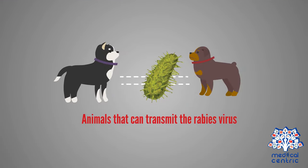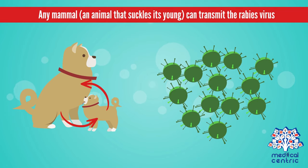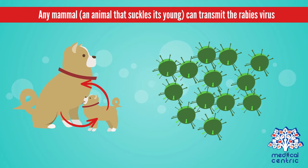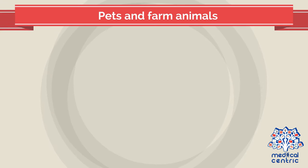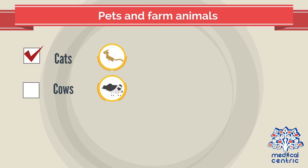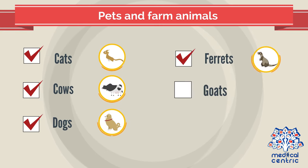Any mammal — an animal that suckles its young — can transmit the rabies virus. The animals most likely to transmit the rabies virus to people include pets and farm animals, such as cats, cows, dogs, ferrets, goats, and horses.